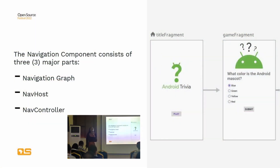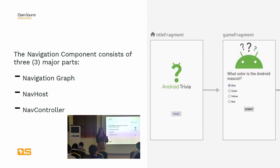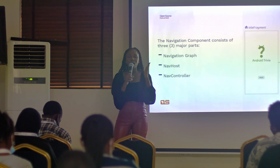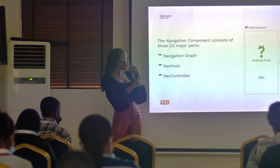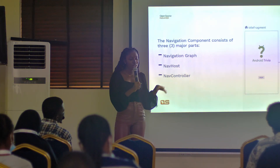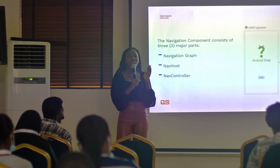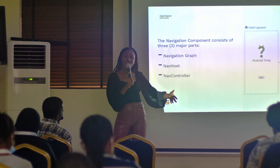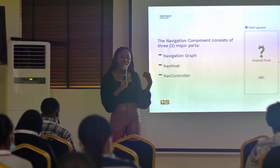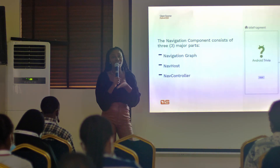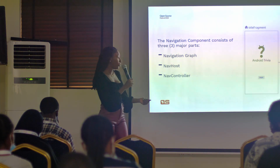The Navigation Component consists of three main parts. The first part is your Navigation Graph, where you see all the screens in your application and how they are connected to each other. If a developer wants to know how the user navigates from the home screen and which screen the user goes to next, they can reference the Navigation Graph. The second part is your NavHost. For NavHost and NavController, I like to use the analogy of a car and an engine — the NavHost is the car, acting as an empty container that holds different elements.